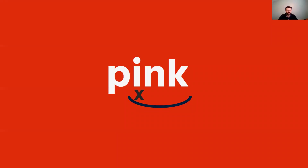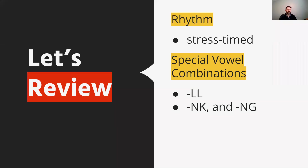The word 'pink,' for instance, could be marked this way to remind us it's not going to make a short I sound — it makes the long E sound. In this video, we talked about rhythm patterns of English and how English is a stress-timed language. We also introduced special vowel combinations with double L endings, the NK and NG endings, and how those can affect the vowel sounds in words that have those combinations.